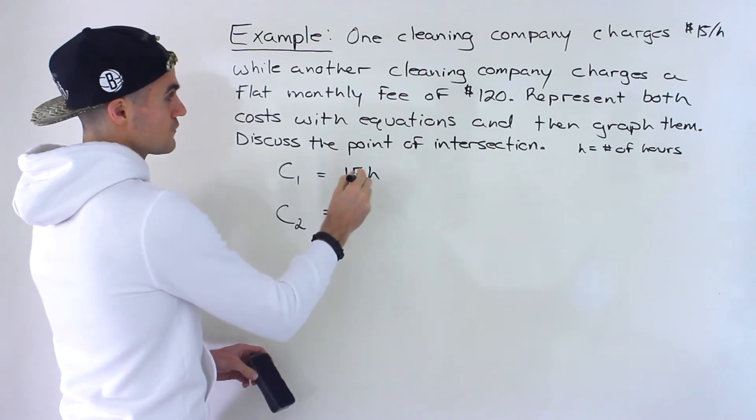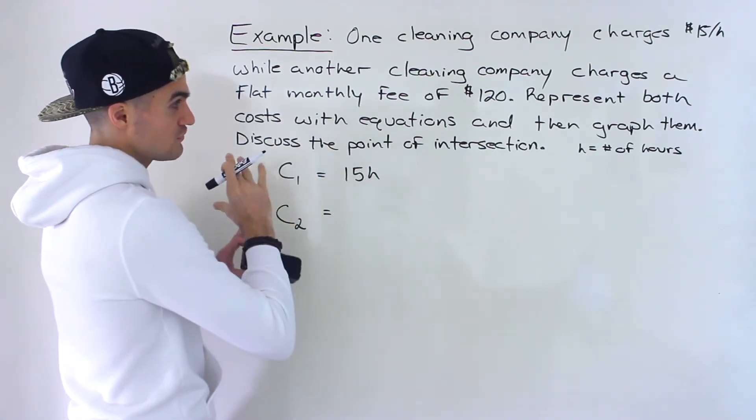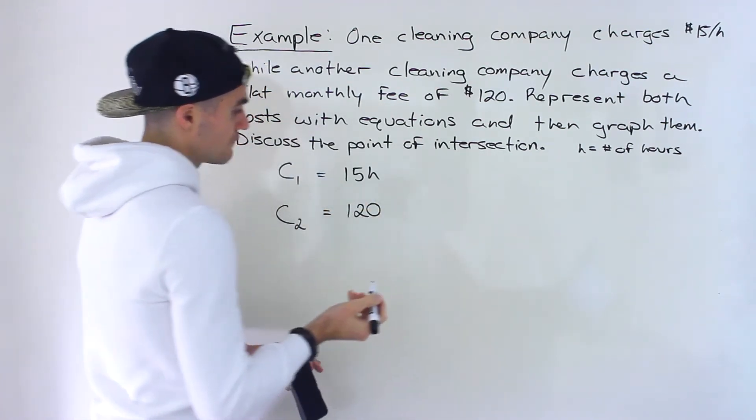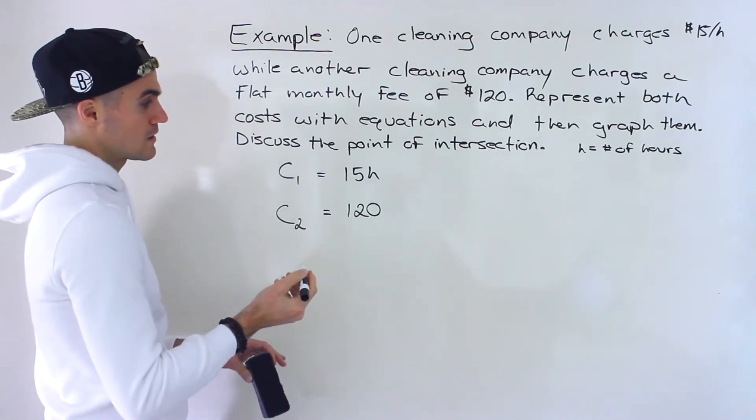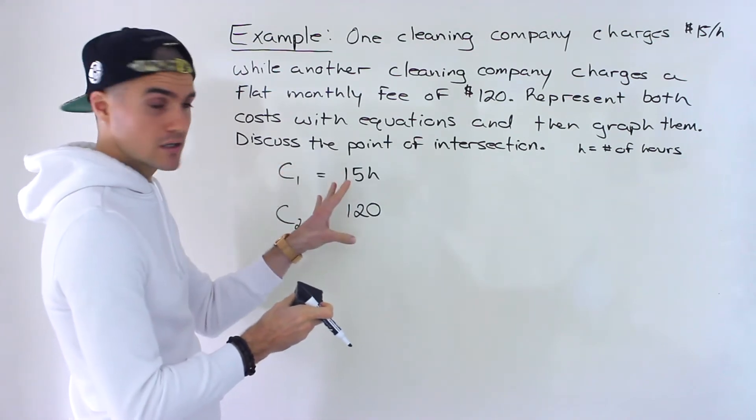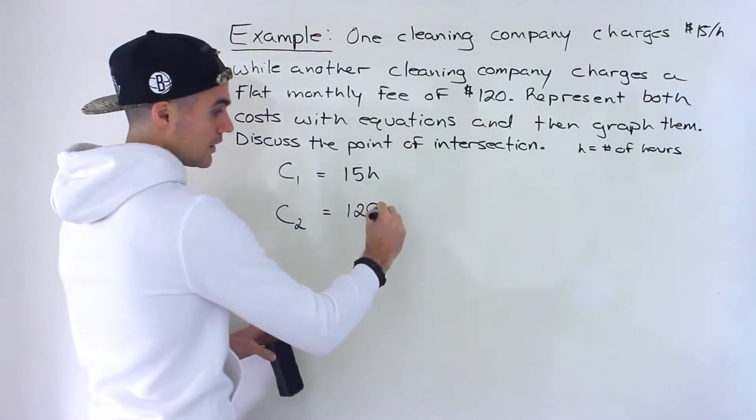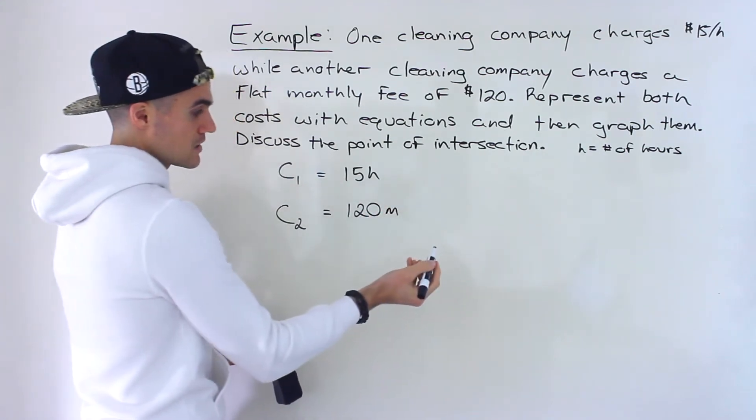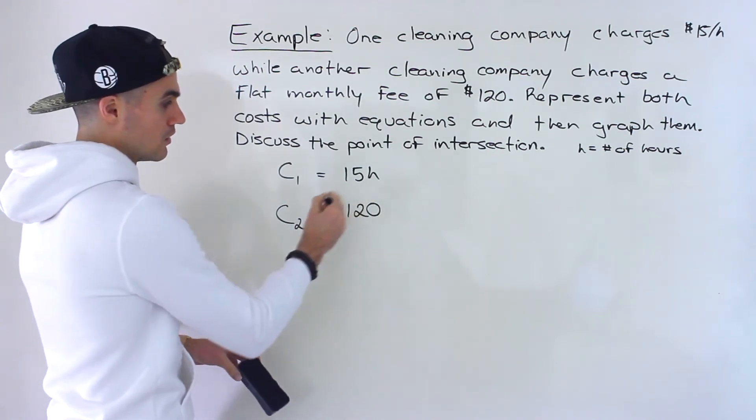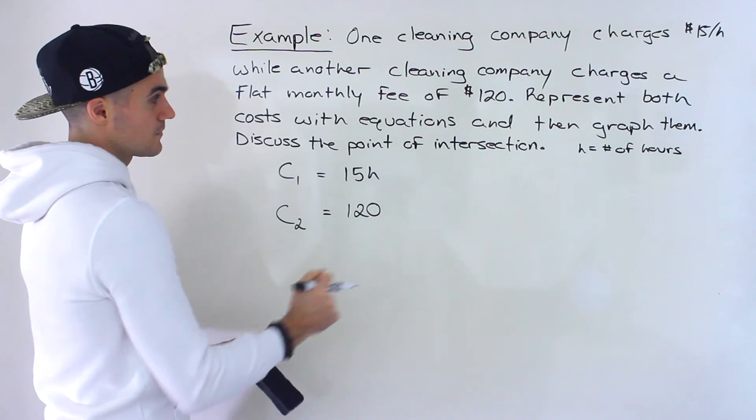So we got $15 for the first company, and then the other cleaning company just charges a flat monthly fee of $120. So it's actually just going to be a flat fee of $120. And because we're assuming we're just looking in a monthly period over here, if we weren't, then we would add another variable here as the number of months. But let's just pretend that we're just looking for one month over here, the flat fee of $120, so it's just a constant like that.